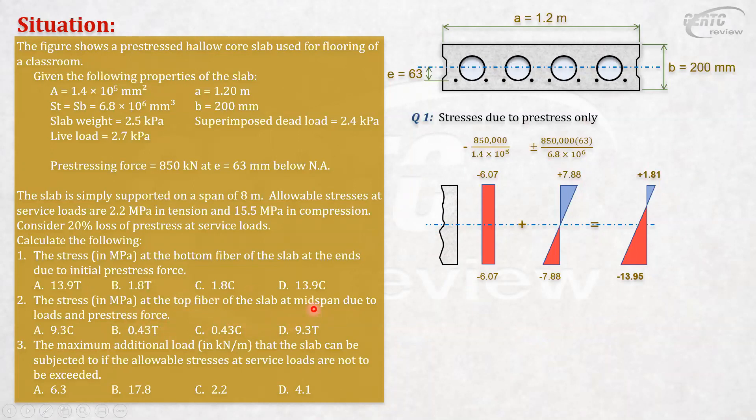This means our slab is in service. We will anticipate the immediate effect of that, but we have to anticipate the losses at service loads. We will now apply these losses over time. We will apply these losses, the loss of prestress, together with of course the load. There will be loss of stress due to the internal material capacity due to fatigue, creep, shrinkage, and several other factors.